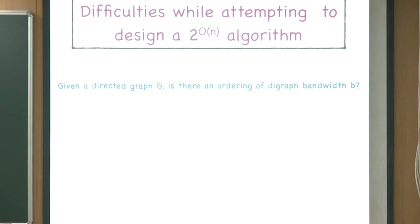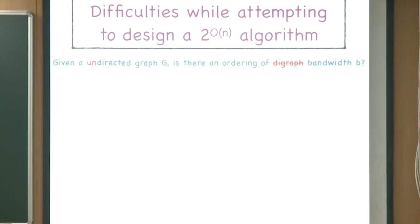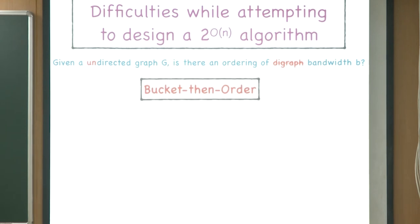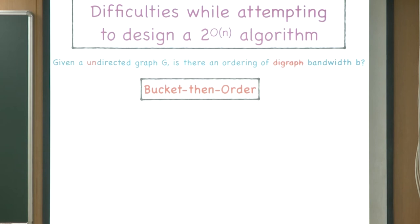We work with the decision version: given graph G and number B, determine if there exists an ordering of digraph bandwidth B. All single exponential algorithms for the undirected case used the bucket-then-order template with a bucketing phase and an ordering phase — the ordering phase differs per algorithm, but the bucketing phase goal is the same.